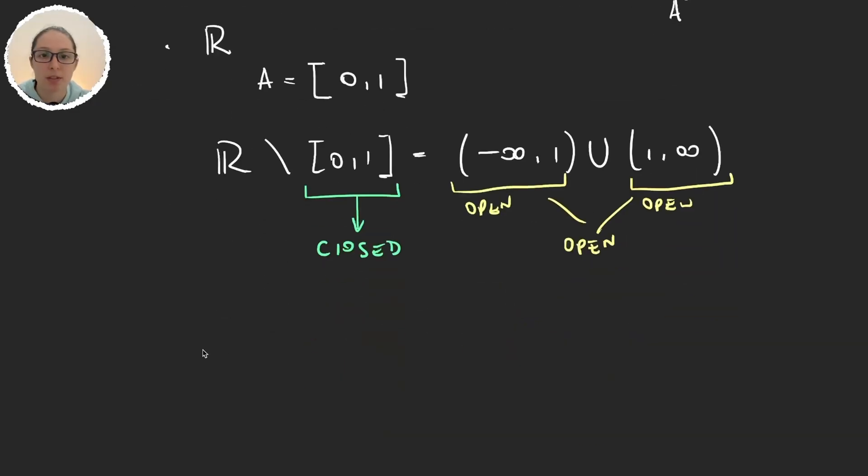What happens if we consider another topology? For example let's suppose we have a set X and we consider the topology of parts of X, that is the discrete topology. In this topology we know we have every set and so every set is open.